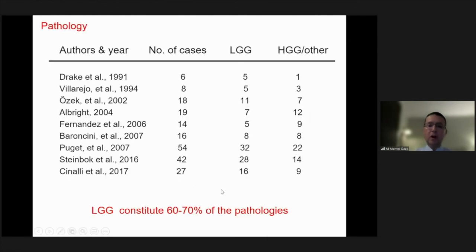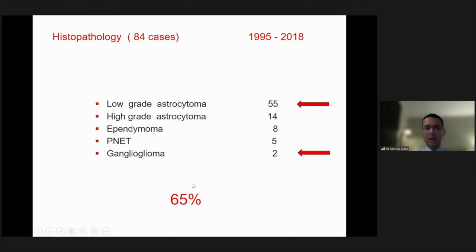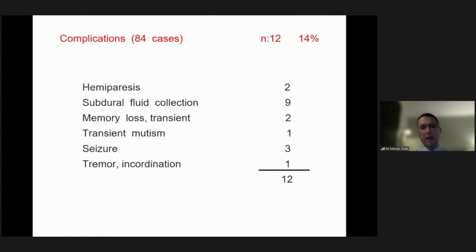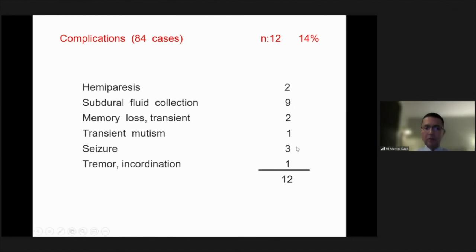Looking at the pathology of these cases in the literature, low-grade gliomas constitute around 60 to 70% of cases. In our current series of 84 pediatric thalamic cases, 65% are low-grade gliomas. Regarding morbidity, the literature reports 0 to 19%, and mortality is between 0 to 2%. In our complications — 14% of cases — two had hemiparesis, nine had subdural fluid collections, all in transcallosal cases, and three had seizures requiring anti-epileptic drugs.